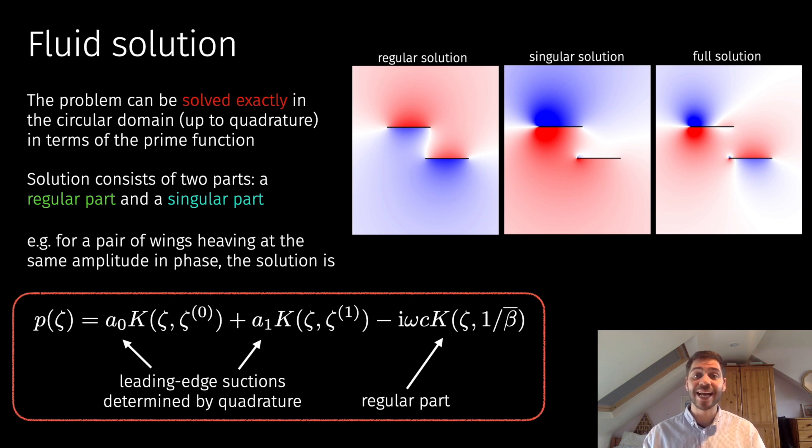Any aerodynamicist would know that in these potential flow frameworks, the solution has a square root singularity at the leading edge of the wing—physically speaking, that corresponds to the leading edge suction force. That means that our solution in the circular domain will also have a singularity, although it's a simple pole. There's a clever way to extract that singularity in a manner that allows us to then construct an analytic solution to the whole problem.